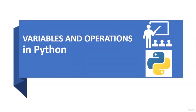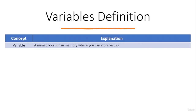Now you will cover variables and their operations. Variables in Python are like boxes — you can put stuff in them and take stuff out, but just like boxes you have to label them properly and remember what's inside, or else you'll end up with a mess. In Python, a variable is a named location in memory where you can store values. You can assign values to variables and then use them in your program to store and manipulate data.